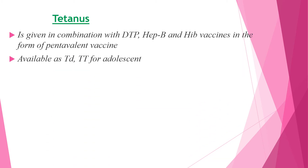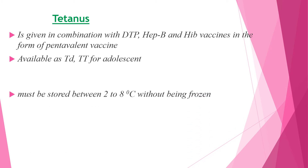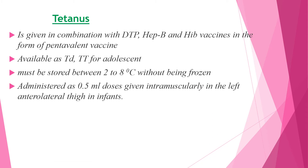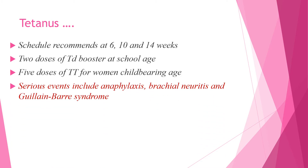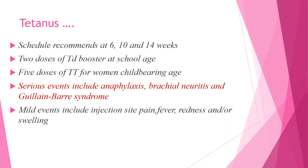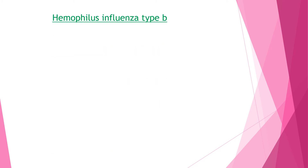Tetanus is also given as a pentavalent vaccine and is also available as tetanus-diphtheria toxoid (Td) for adolescents. It must be stored between two to eight degrees Celsius without being frozen and given as 0.5 ml intramuscularly in the left anterolateral thigh. All penta vaccines are given at 6, 10, and 14 weeks. Two doses of tetanus-diphtheria booster at school age and five doses of TT for women of childbearing age. Serious events include anaphylaxis, brachial neuritis, and Guillain-Barré syndrome, which are rare. Mild events include injection site pain, fever, redness, and swelling.